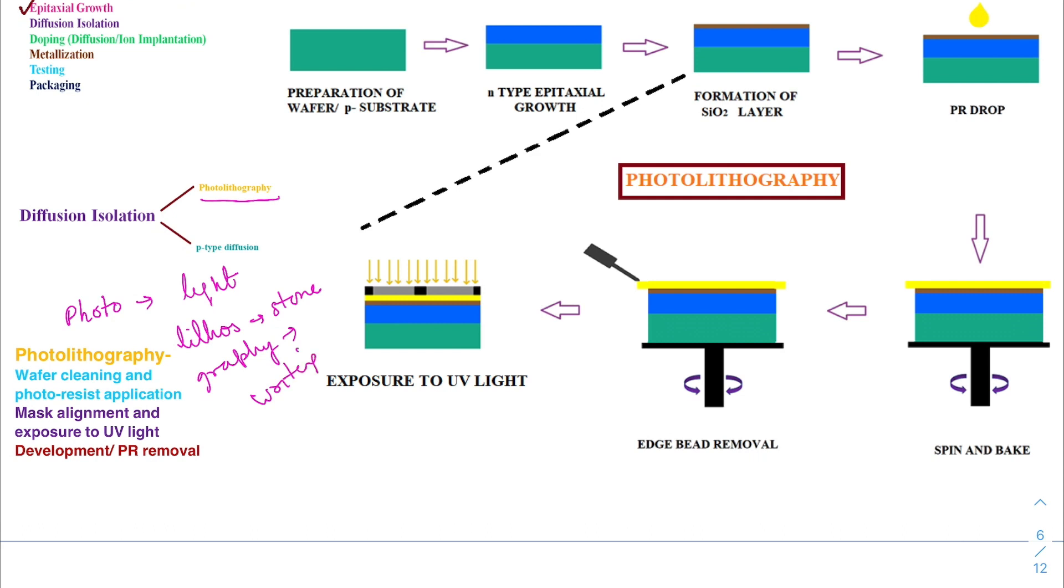That is writing on substrate using light. There are three major steps in photolithography. The first is wafer cleaning and application of photoresist material, then mask alignment and exposure to UV light, and finally development or photoresist removal. After epitaxial layer growth, we first form the SiO2 layer over the N-type epitaxial layer by oxidizing.